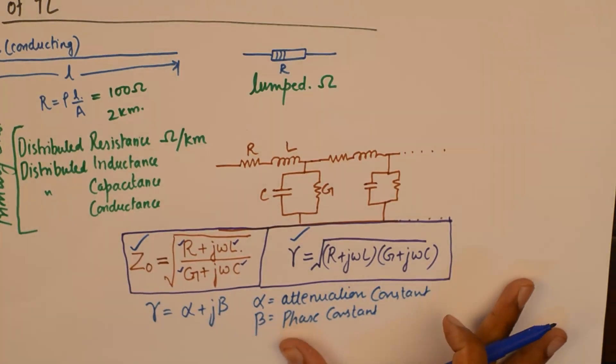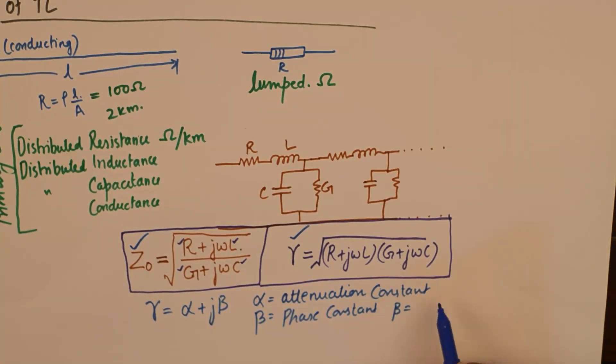And yes, from beta other things can also be calculated like beta is 2 pi by lambda and the circle goes on and on.